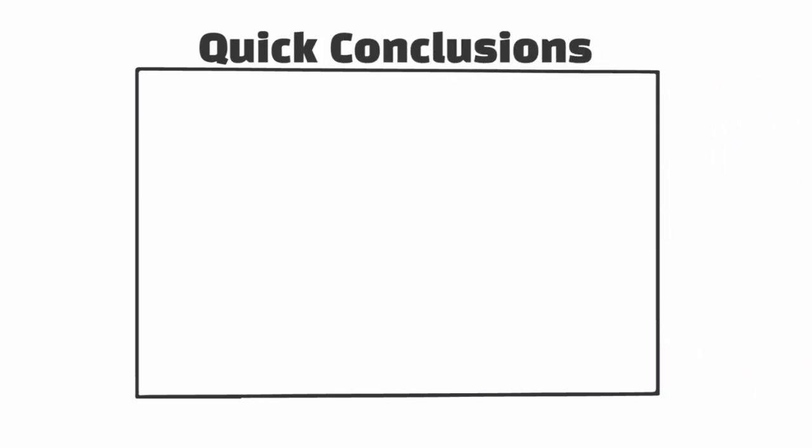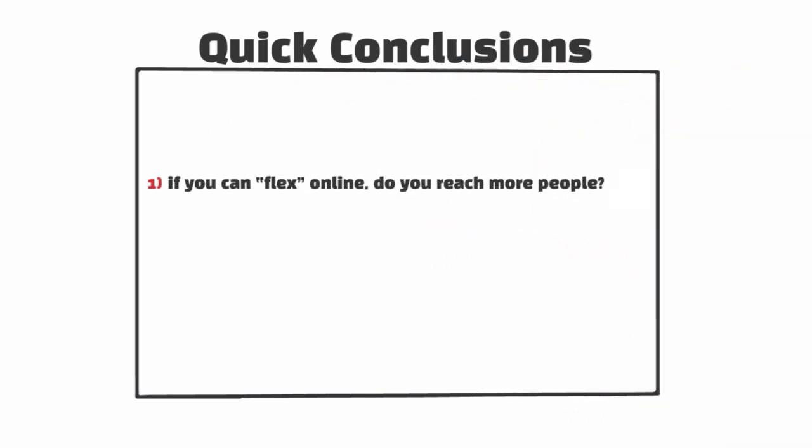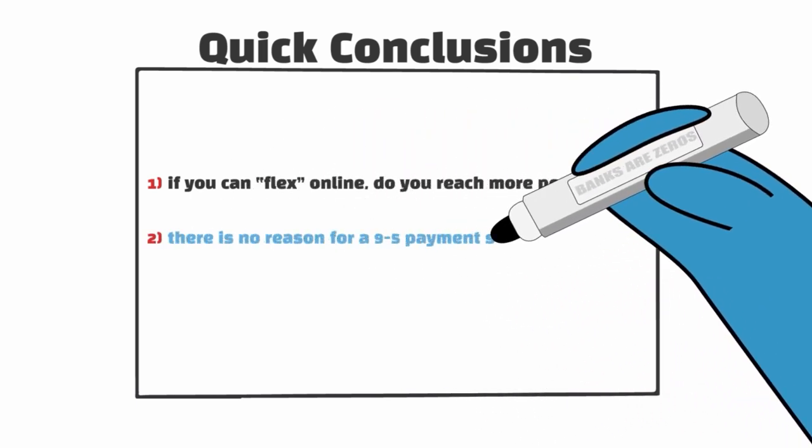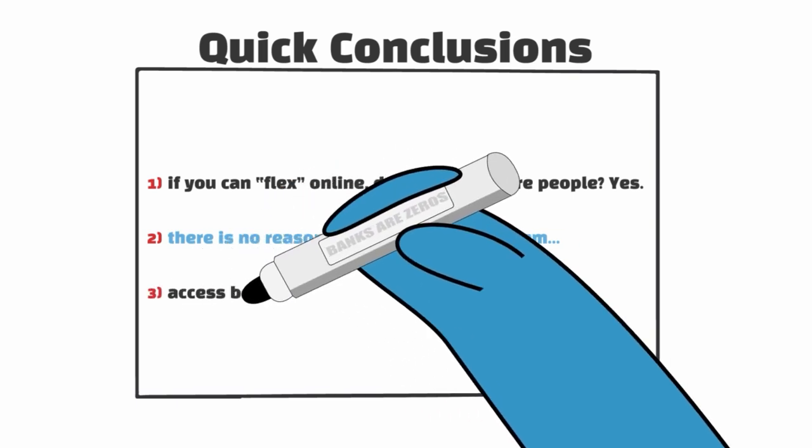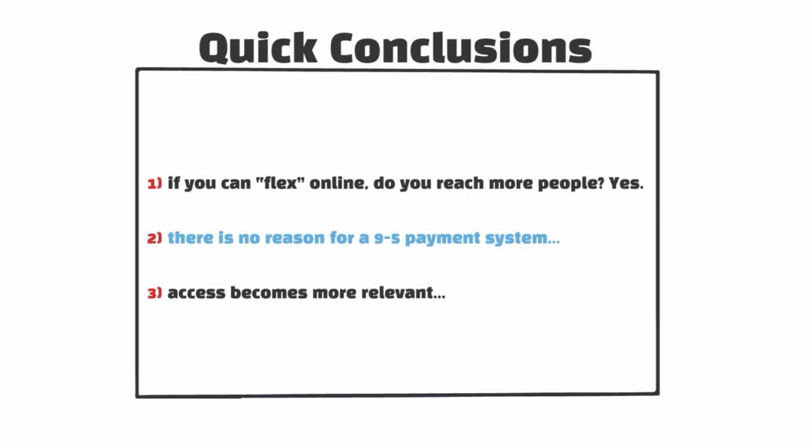Quick Conclusions. At this point, you should come to a few conclusions. 1. If you can flex online, do you reach more people? The answer is yes. The rented Lamborghinis and mansions won't work anymore. 2. There is no reason for a 9 to 5 payment system. It can be streaming money or one-time instant payments. And 3. Access becomes more relevant and this could range from the right network to special areas in a built VR video game.